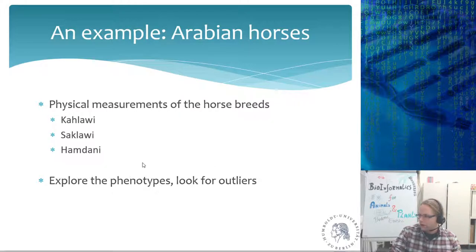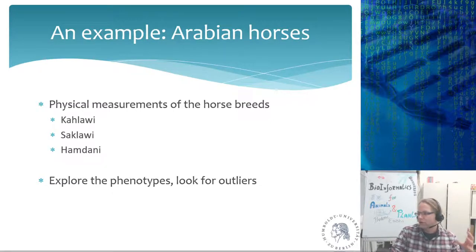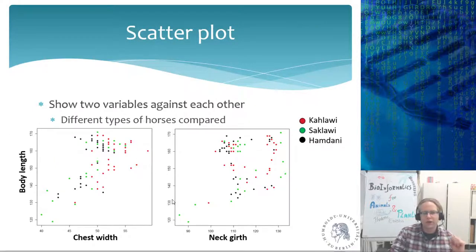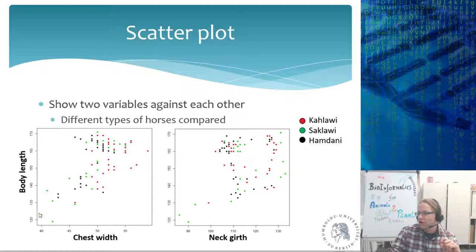The first thing you must do when looking at phenotypic data is check for outliers. There are things like comma errors, where someone put the decimal point in the wrong place, making one individual appear 10 times higher or lower. For example, if someone meant to write 37.6 but wrote 3.76. A scatter plot lets you easily spot and correct such errors — if a horse suddenly has a body length of 12 centimeters, that is clearly wrong.